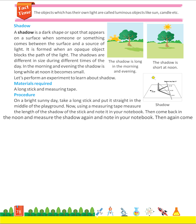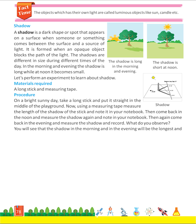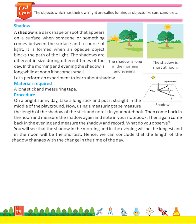Come back at noon and measure the shadow again and note it in your notebook. Then come back in the evening and measure the shadow and record it. You will see that the shadow in the morning and in the evening will be the longest, and at noon it will be the shortest. Hence, we can conclude that the length of the shadow changes with a change in the time of the day.